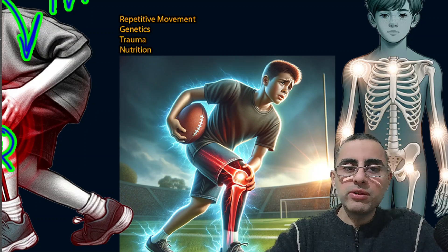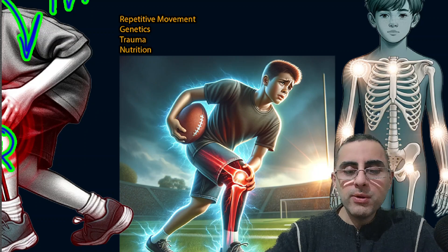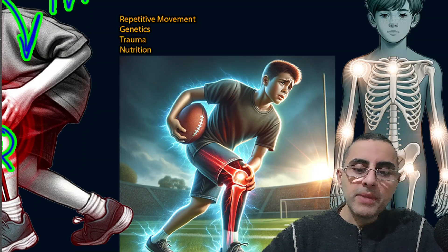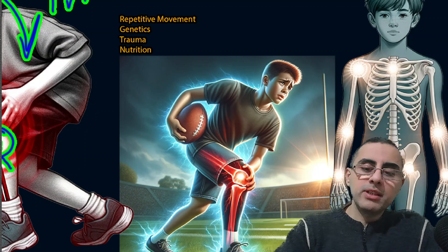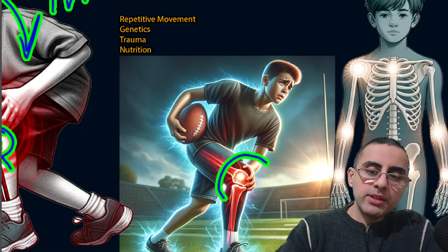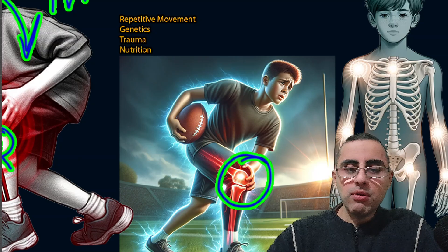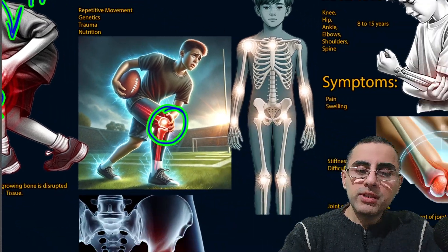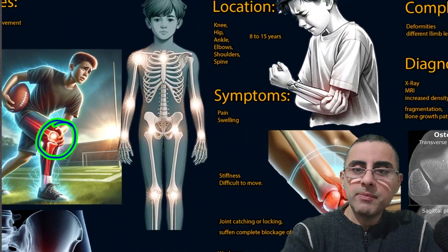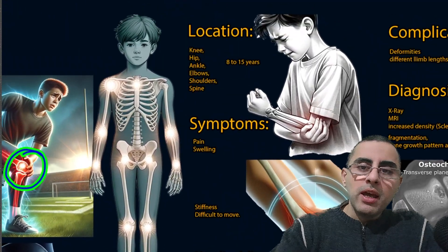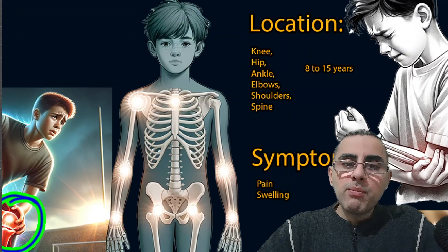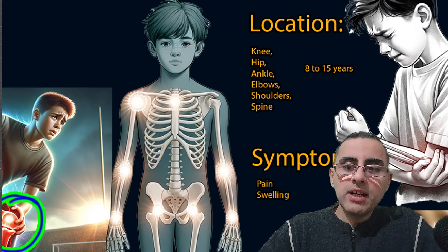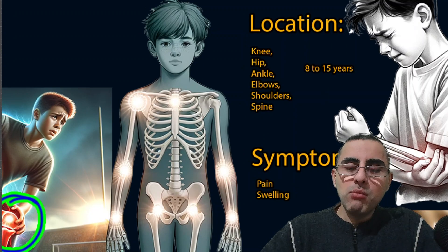There are no clear causes for osteochondrosis, but some risk factors include repetitive movements, repetitive traumas, genetics, and nutrition. Repetitive traumas during sport are an important part of osteochondrosis. The most commonly affected bones and joints are important to understand.